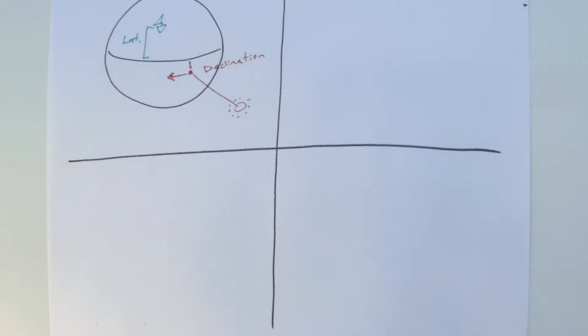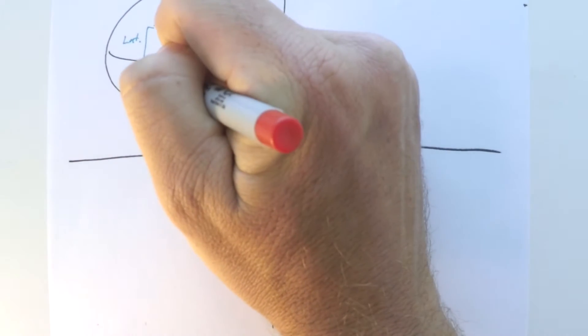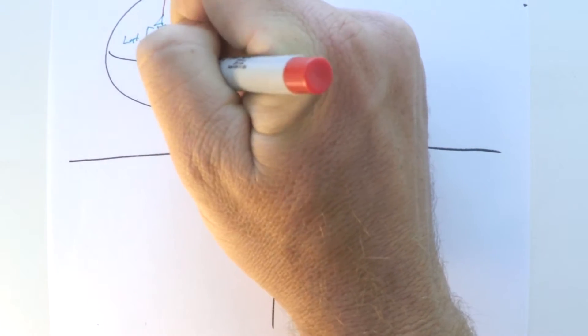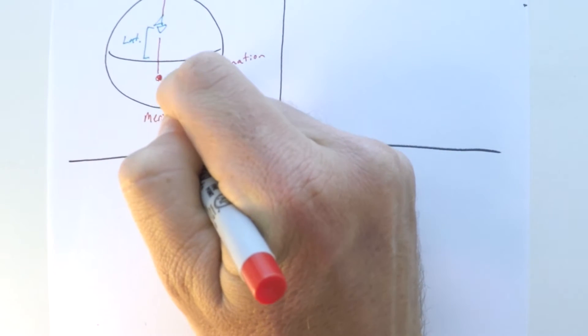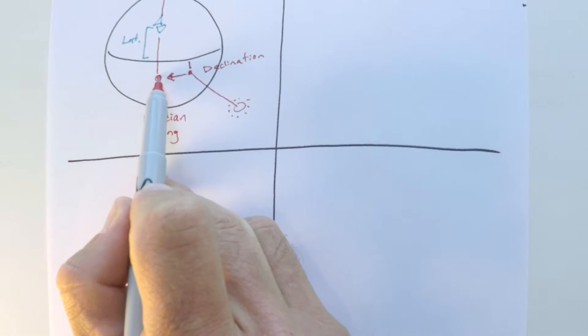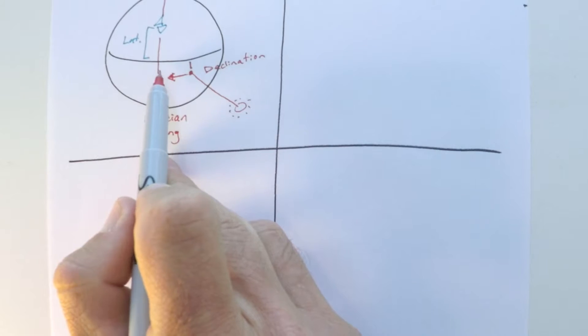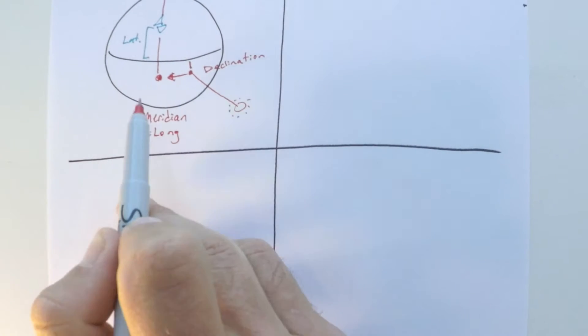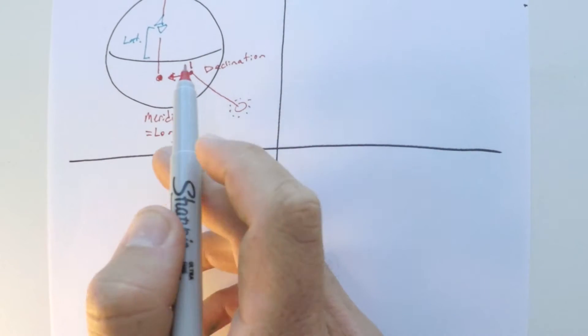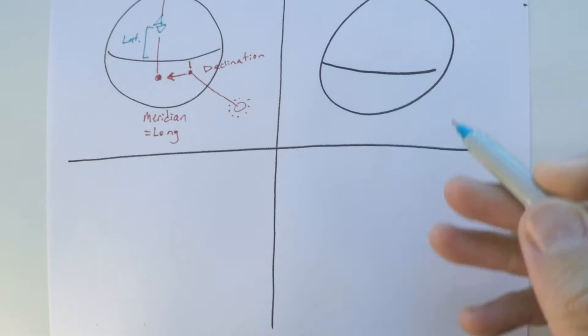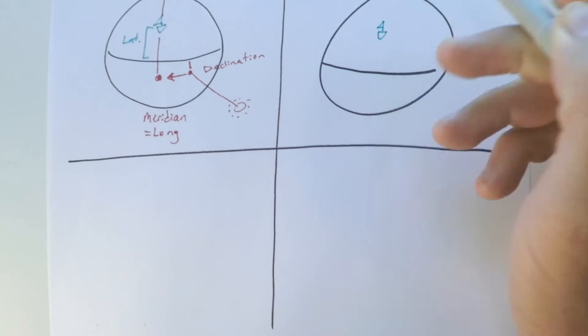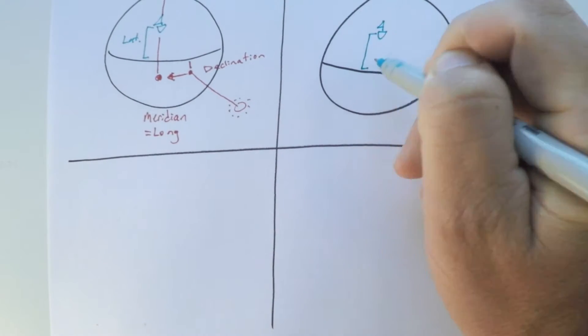There's one time each day when the Sun and us are on the same meridian or line of longitude. As the Earth rotates beneath the Sun once each day, the Sun is on the same line of longitude as us — it's on our meridian — and that's called meridian passage. It also happens when the Sun is at its highest point in the day. If we can form a relationship between these positions, we can quickly use meridian passage to our advantage.